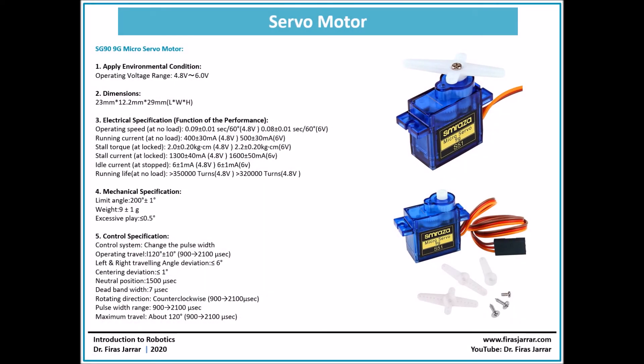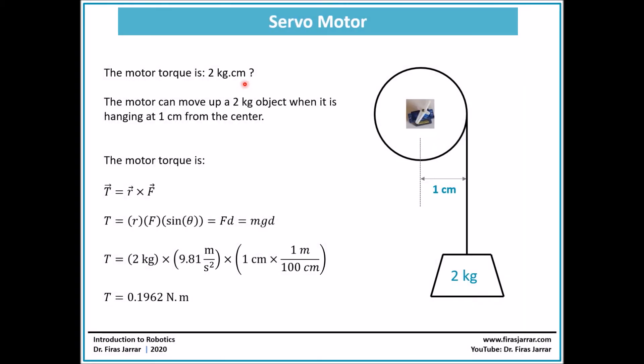Now servo motors, you'll find many servo motors out in the market. The one we selected here has a mass of 9 grams and a maximum stall torque of about 2 kg cm. By 2 kg cm we mean that the servo motor can move up a mass of 2 kg hanging at a distance of 1 cm from the center of the shaft of the motor.